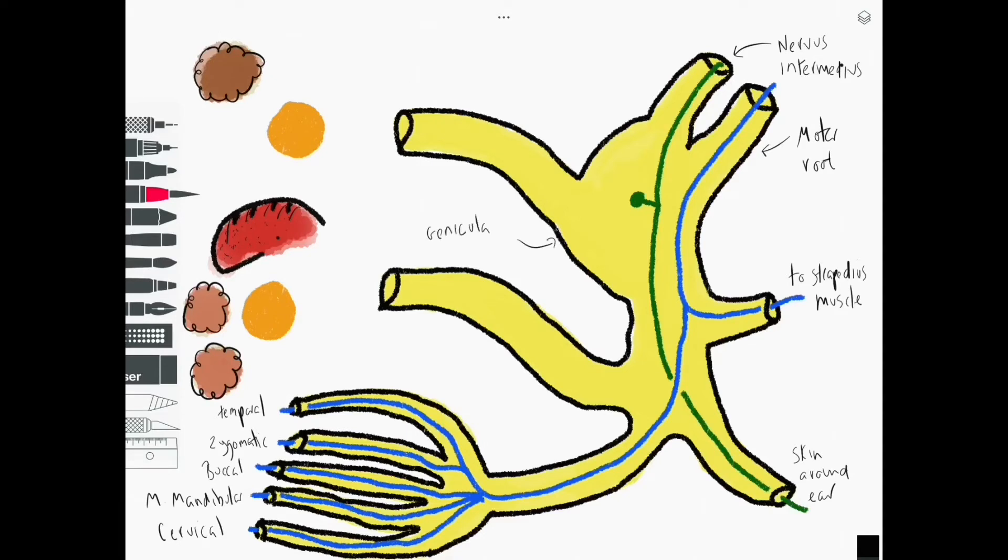Next we need to talk about those special sensory fibers traveling back from the anterior two-thirds of the tongue carrying taste sensation. Again, notice the cell bodies in the geniculate ganglion. These travel along the lingual nerve, and this nerve is a branch of the mandibular division of trigeminal. They hitch a ride along this nerve initially to reach the chorda tympani nerve. The chorda tympani nerve is a branch of facial, and the fibers travel back from there and via the sensory route on towards the brainstem. So this is special sensory from the anterior two-thirds of the tongue.